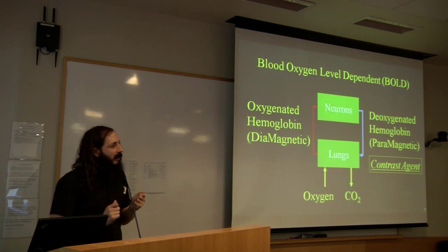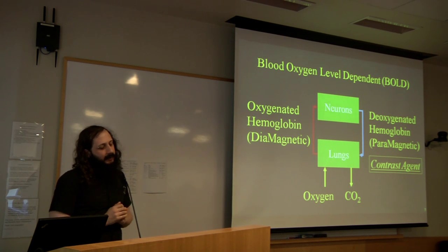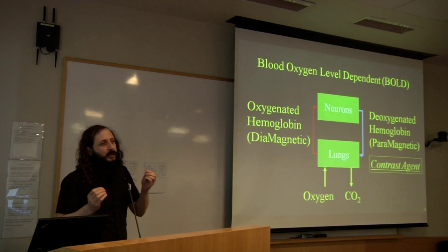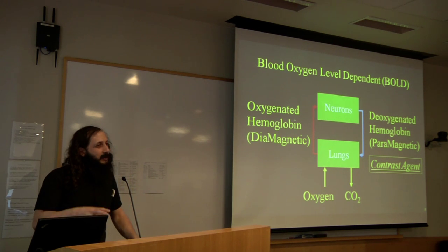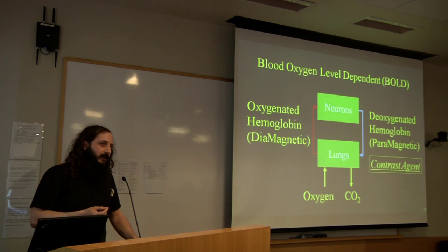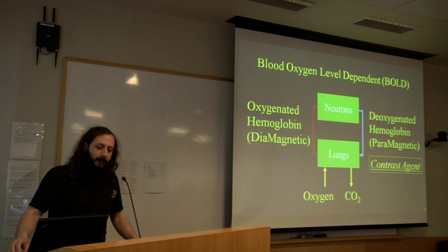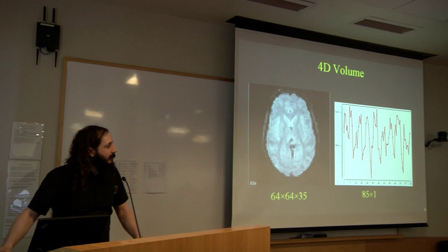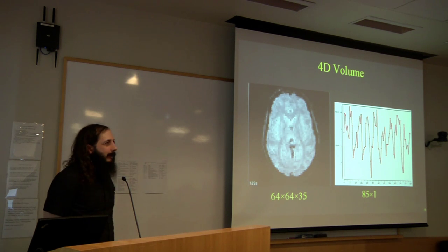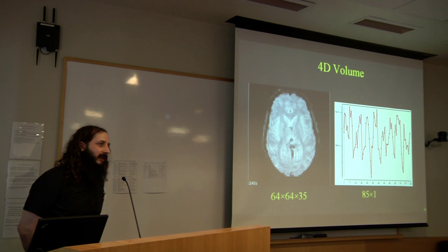One issue with fMRI is that the mechanisms through which neurovascular coupling is controlled are not completely well understood. The BOLD signal used for fMRI is an indirect measure of neural activity, and that needs to be taken into account when performing analysis. Here on the left is a movie of some BOLD-weighted EPI data collected while a subject is looking at a flashing checkerboard.